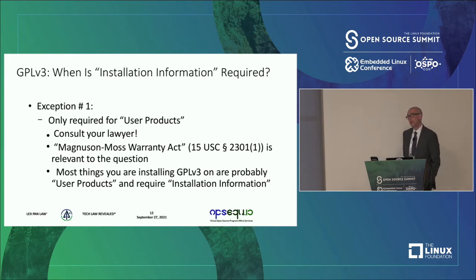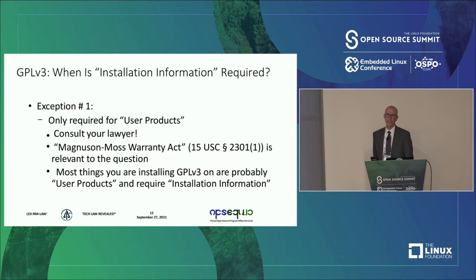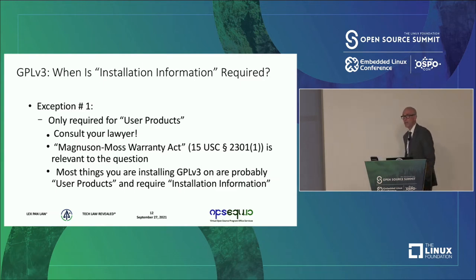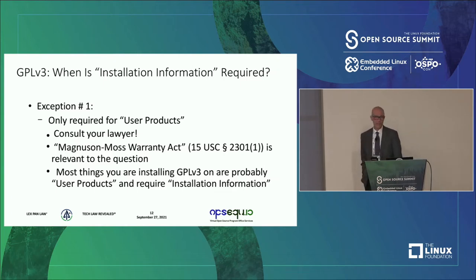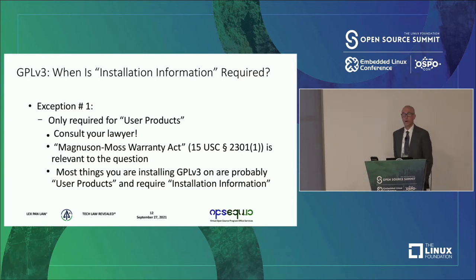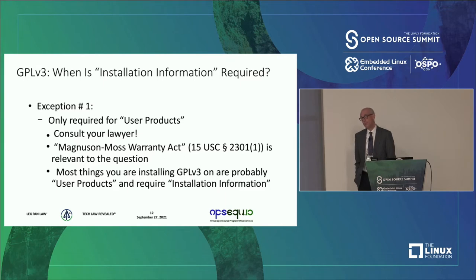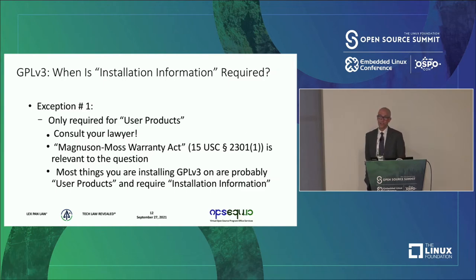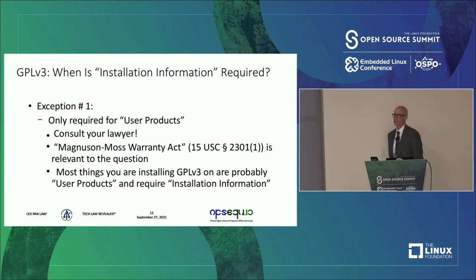The first exception is that it only applies to a thing called a user product. What a user product is is something you probably want to discuss with a lawyer, because it's not entirely clear. It is tied to some statutory requirements in a law called the Magnuson-Moss Warranty Act. Bottom line: most things that people are installing code on are probably user products. There may be some large industrial machines that wouldn't fall within that definition, but most folks at this conference are probably working with user products.